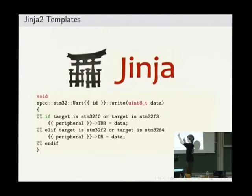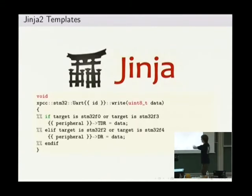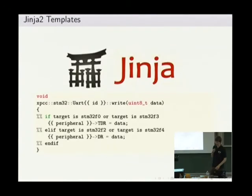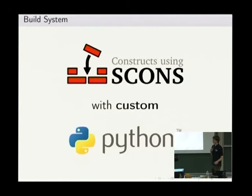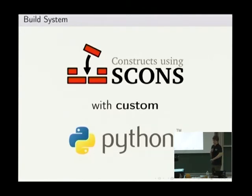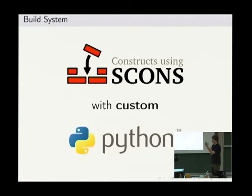One cool thing is we can check what kind of target we're building the driver for. One manufacturer normally uses the same peripherals for every controller, but they change subtle things — like renaming the data register to transmit data register, or adding a transmit data register for F0 and F3 families. We can handle this with conditional checking in the template without writing a whole new driver. Our build system is based on SCons, which runs on Python and is easy to extend. We have custom Python scripts for lookups and driver generation, and it tracks dependencies — if you change a template file, SCons regenerates all header and C++ files and recompiles.